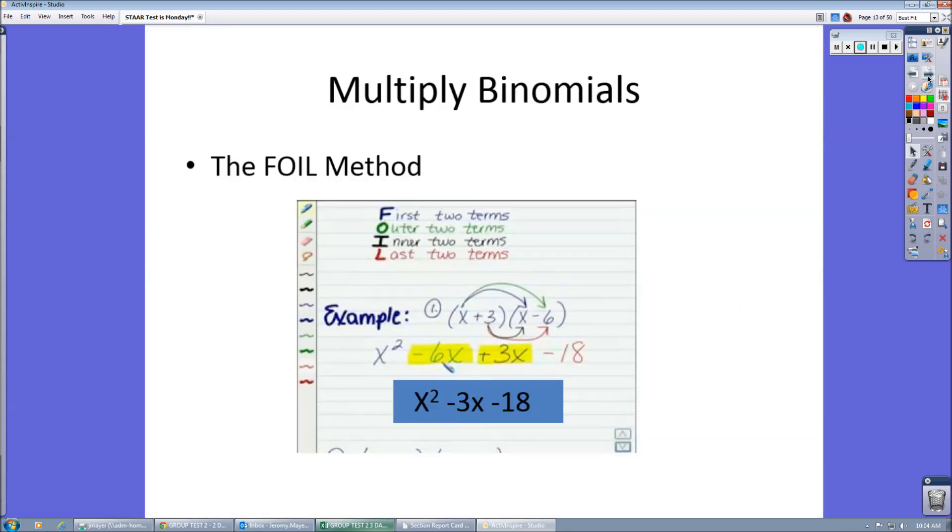Multiply X times X, then X times negative 6. 3 times X, then 3 times negative 6. And then combine like terms.